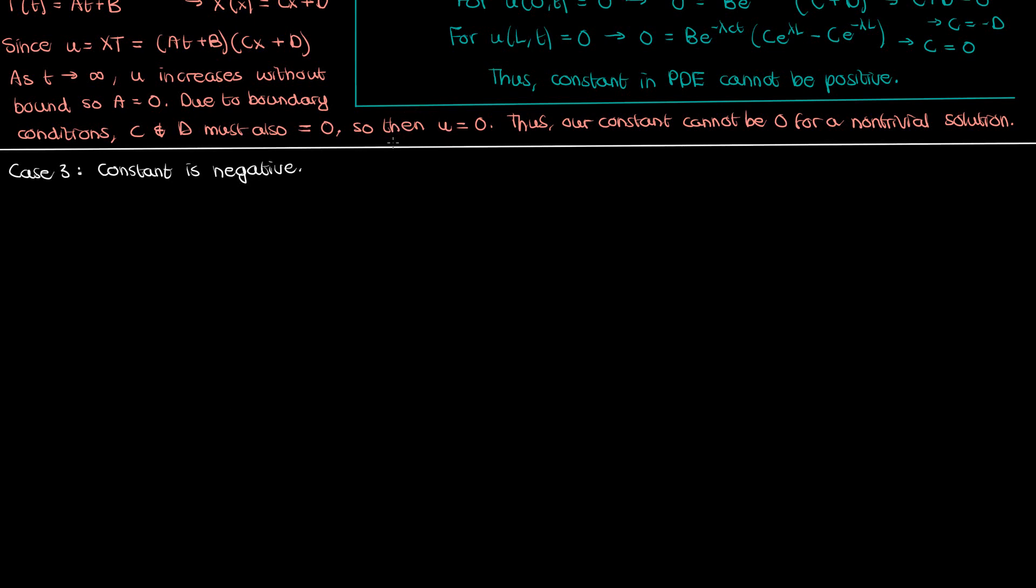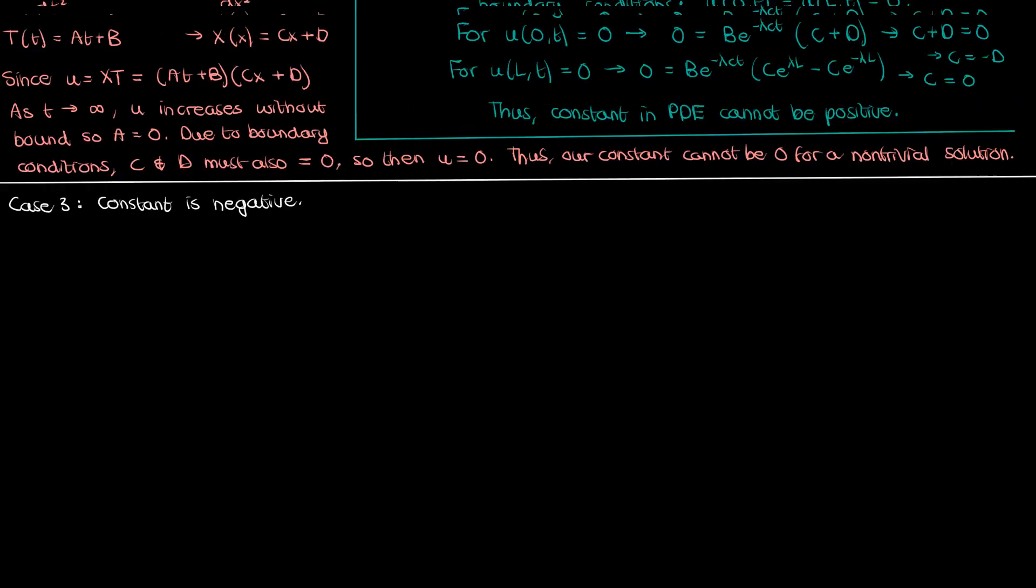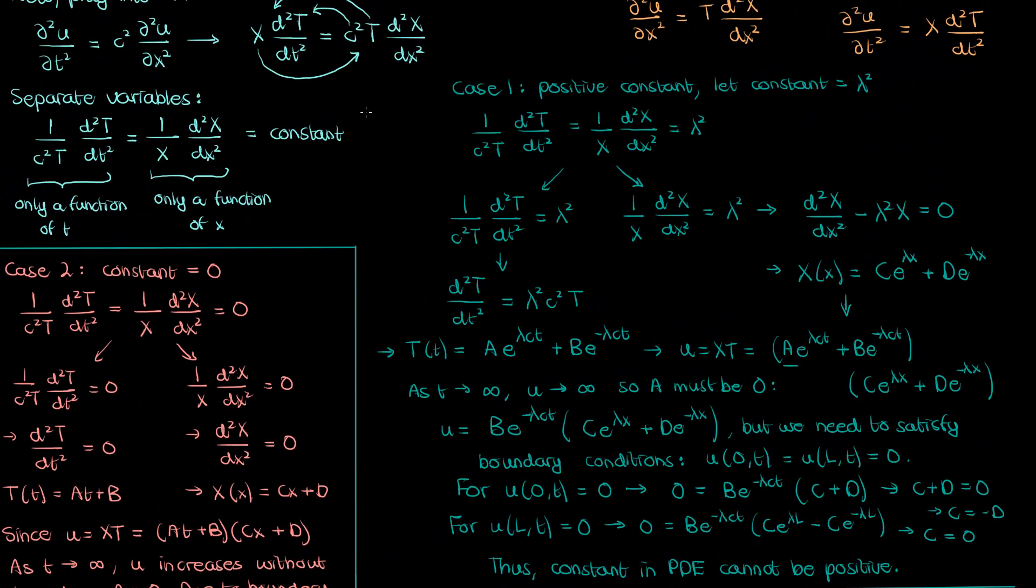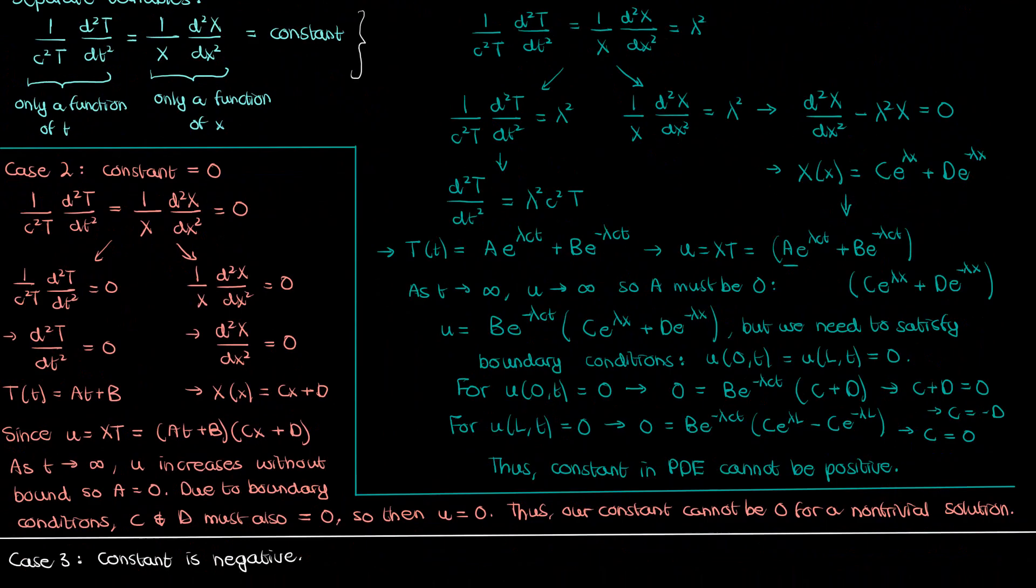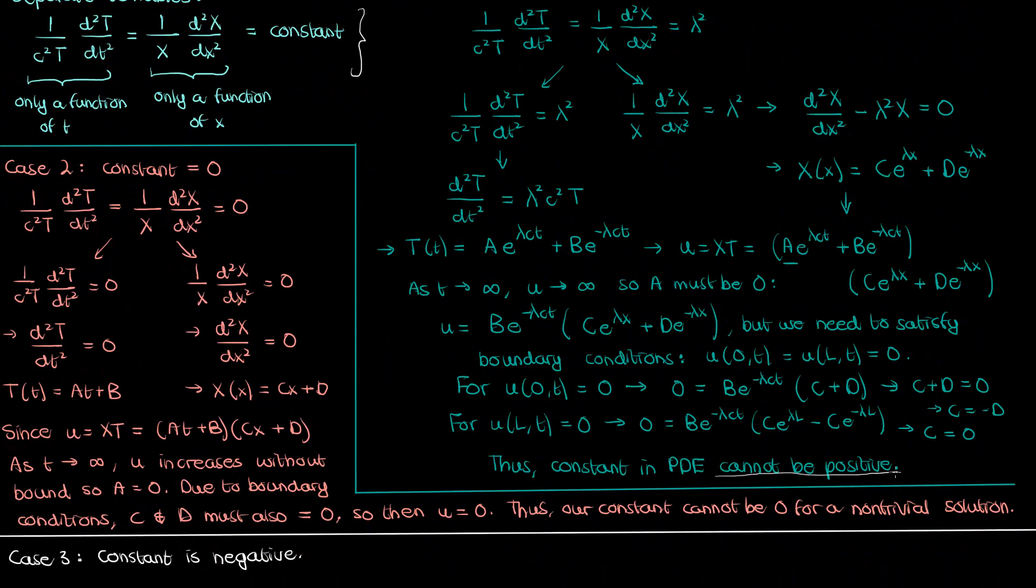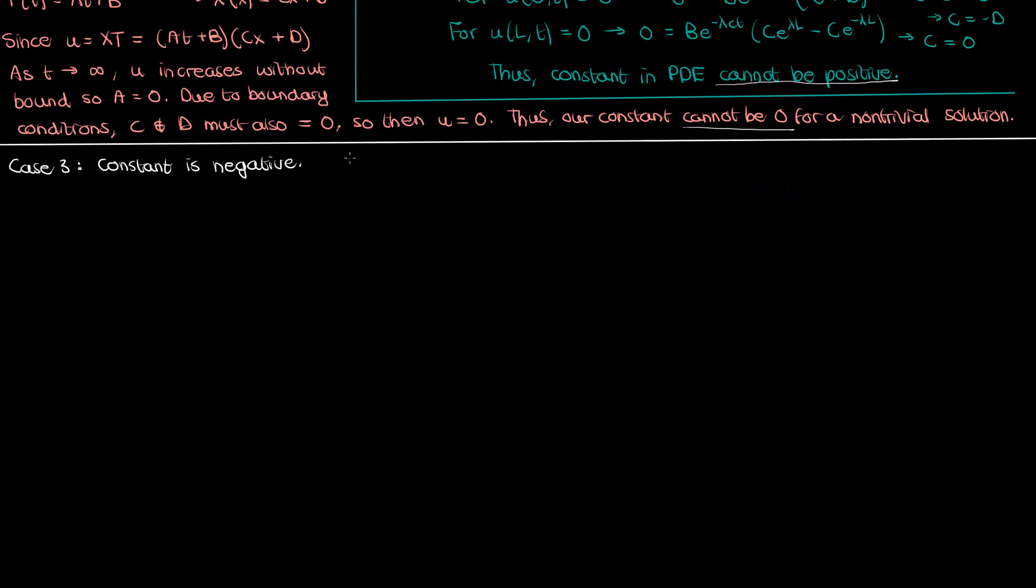Greetings students and welcome to part 2 of the solution to the finite wave equation using separation of variables. In the last video we separated the partial differential wave equation into two ordinary differential equations or ODEs using a separation constant. We argued in that video that the separation constant could not be positive or zero and that it can only be negative. We're going to discuss that third possibility in this video and complete the solution to our wave PDE.